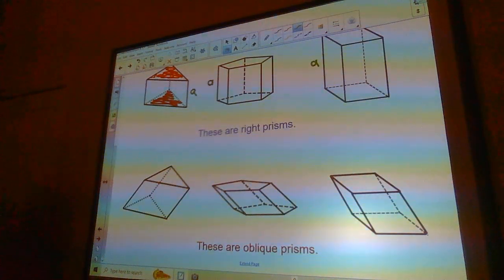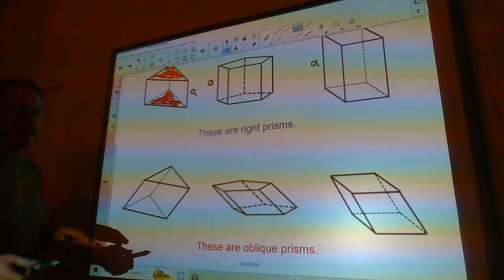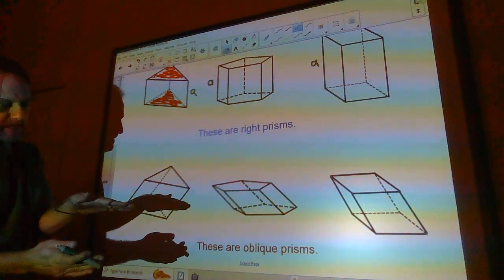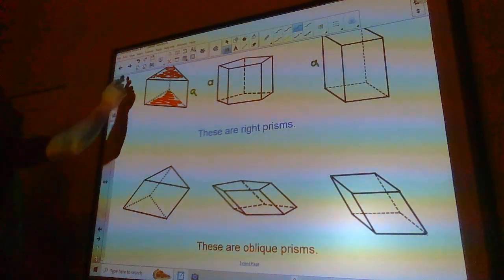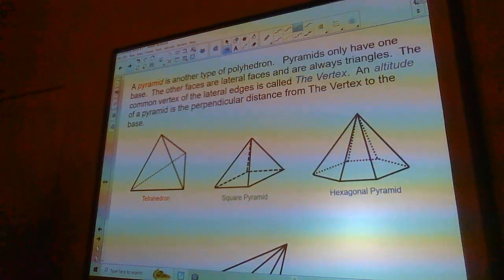So these are oblique prisms. They're all kind of leaning. It's like you take a stack of paper and you kind of slide it to one side so it's not straight up and down.